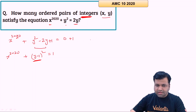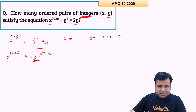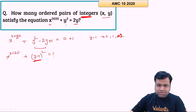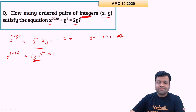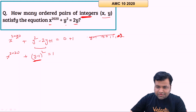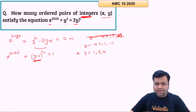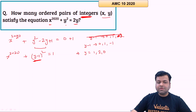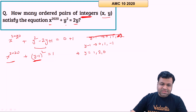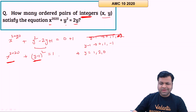Since x^2020 ≥ 0 and (y−1)² ≥ 0 and they must sum to 1, (y−1)² can only be 0 or 1. So y−1 can be 0, 1, or −1, giving y = 1, 2, or 0. Any other integer value of y−1 would make (y−1)² ≥ 4, making the sum exceed 1. These are the only three possible values for y.